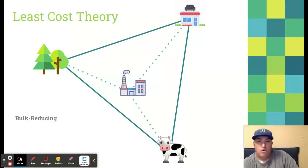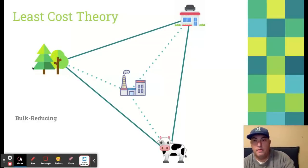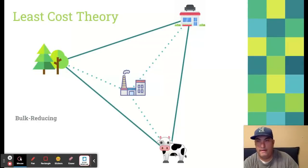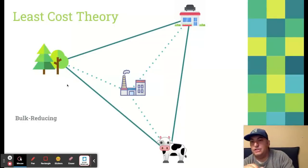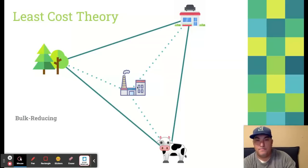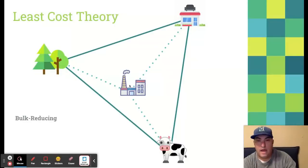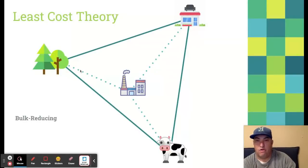This is different from a bulk reducing industry. In this example, I'm creating furniture. I need the wood — that's going to be the frame of my couch or chair — and then I have the leather from this cow. Now, those raw materials are actually going to be heavier. I'm getting the big leather hides from the cow, and lots of trees to break down into frames for the furniture. So this is going to be a bulk reducing industry. According to Weber, since it's bulk reducing, I'm going to put my factory closer to my raw materials, because this is the heavier stuff. I'm not going to mind transporting my finished furniture all the way up to the furniture store because it's going to be lighter than the raw materials. That's least cost theory.